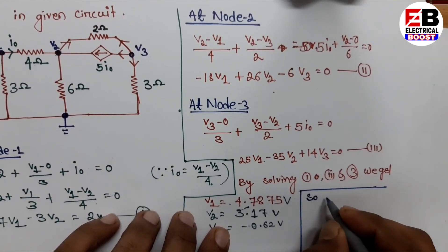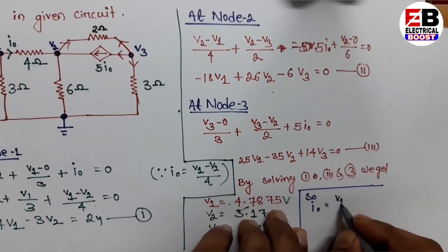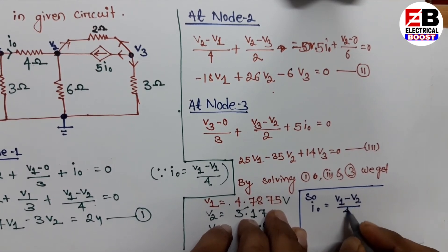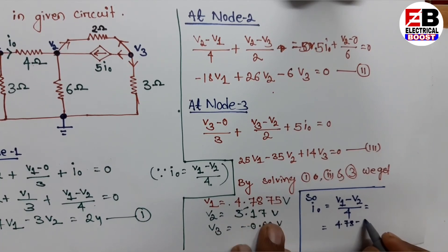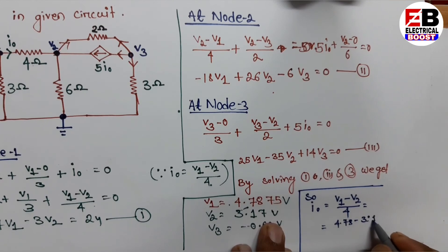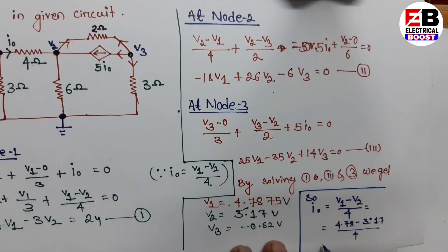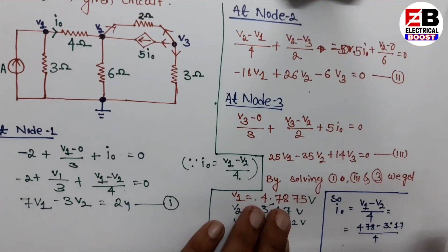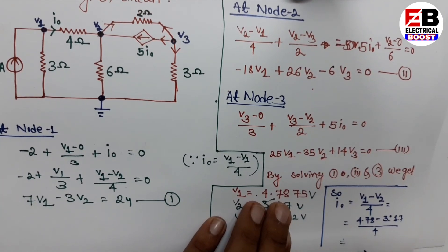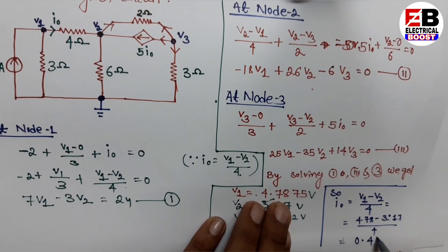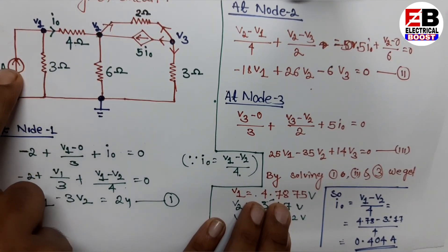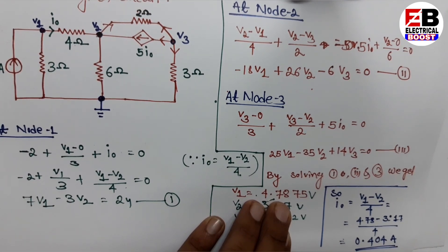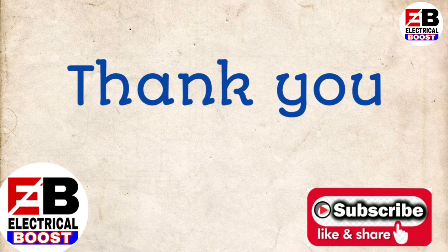Our objective is to find I-naught. The current direction is from V1 to V2, so I-naught equals (V1 minus V2) divided by 4, which is (4.78 minus 3.17) divided by 4, equals 0.404 amperes. If the current direction were reversed, it would be (V2 minus V1) divided by 4. Thank you for watching — please like and subscribe to the channel.